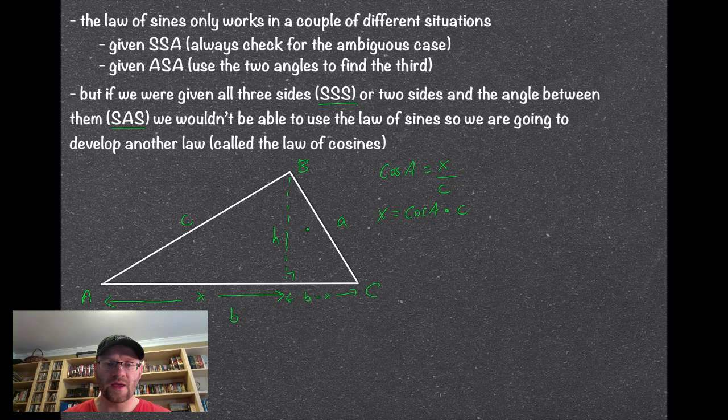The next thing I'm going to do is use the Pythagorean theorem, and I'm going to call this, I'm going to use it with the C squared equals H squared plus X squared, and that's going to come in handy in a second, and the next thing I'm going to do is use the same Pythagorean theorem, but with A, H, and B minus X, so A squared equals H squared plus B minus X squared.